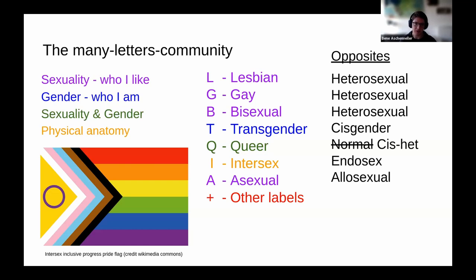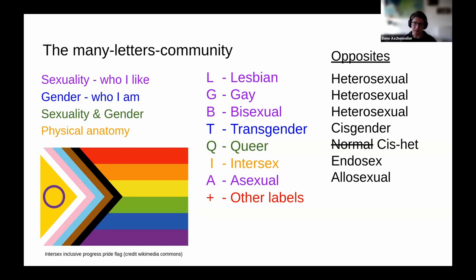Keep in mind that especially for older generations, the word queer might still bring up bad memories or feelings. The next letter is I, which stands for intersex, related to biological sex — and even biologically, there are more than two sexes. An intersex person is one whose physical anatomy does not align with what we expect in a typical woman or man. Each of these labels has an opposite, and in most of society, being heterosexual, cisgender, endosex, and allosexual is considered the default. Please avoid using the word 'normal.' You could use 'cis-het' as an abbreviation.